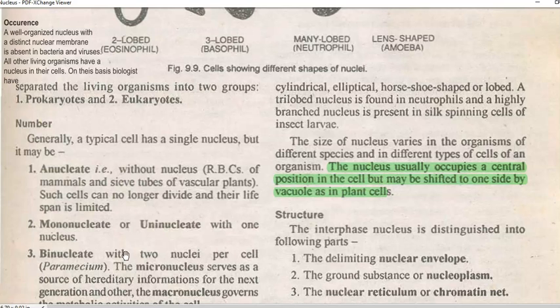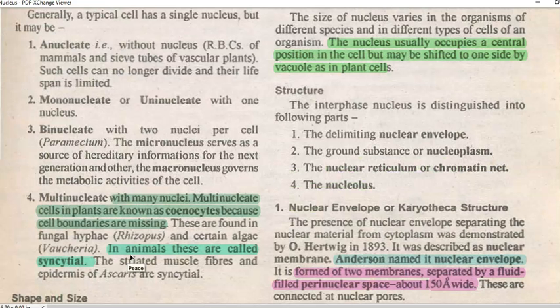Now we look at the number of nuclei. It can be a single nucleus or multiple nuclei present in the cells. First, we look at the anucleate condition — without a nucleus, some cells exist.